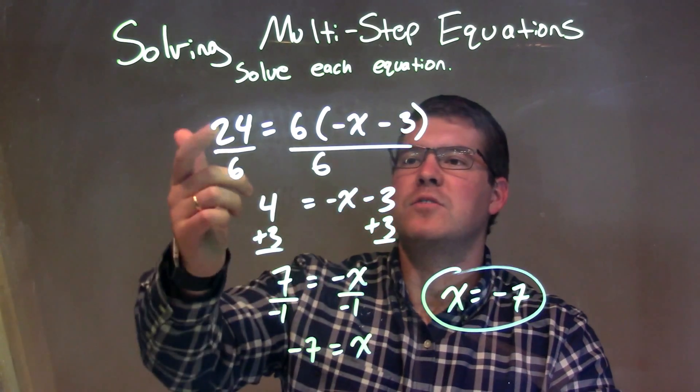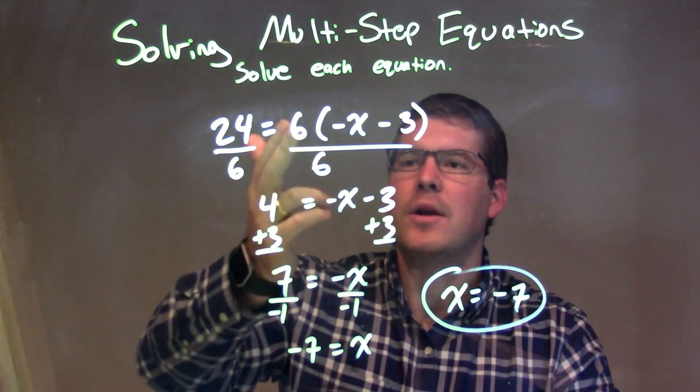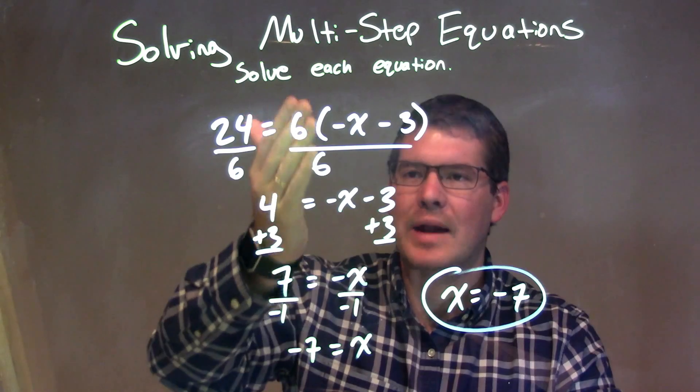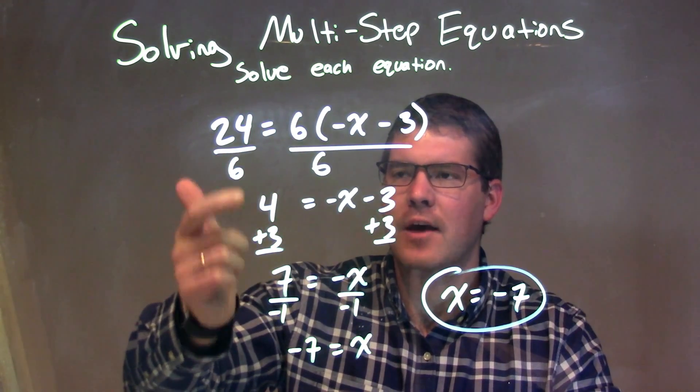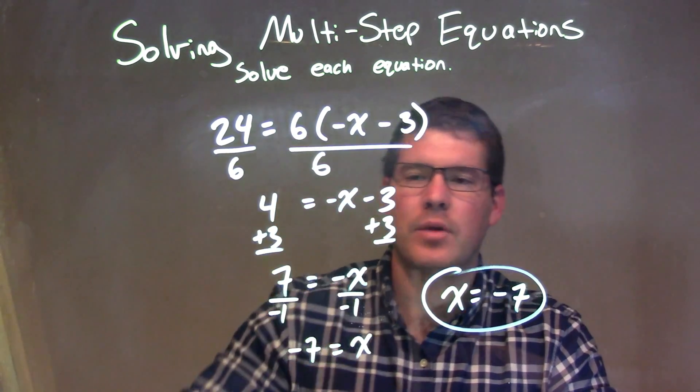So, let's recap. We're given 24 equals 6 times negative x minus 3. Well, I want to divide by 6 on both sides and eliminate that 6 on the right-hand side. When I did that, I was left with 4 on the left, because 24 divided by 6 is 4. And then, on the right, my negative x minus 3 was left in the parentheses.